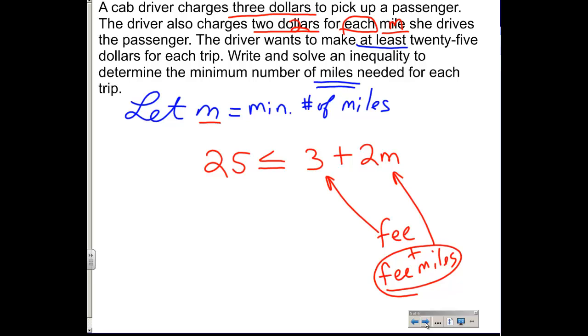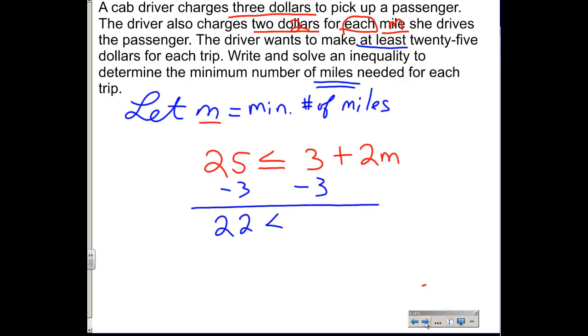All I got to do now is solve for m, which is the number of miles, and it will tell me the minimum number of miles the person has to drive to make at least $25. So we're going to start solving by moving the 3 over or subtracting 3 from both sides. And that will bring this side down to $22. $22 is less than or equal to $2 times the number of miles.